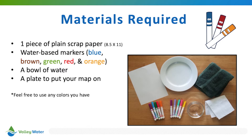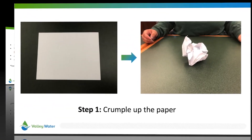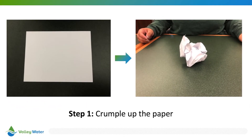Before we begin the activity, take a moment to gather your materials. You'll need a piece of plain scrap paper, some water-based markers, a bowl of water, and a plate to put your map on. Now let's get started. The first step is to take your piece of paper and crumple it up into a ball, just like the picture.